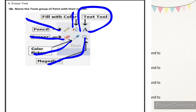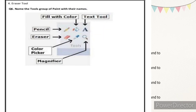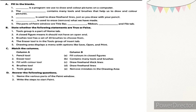What is text tool? Text tool means if you want to write something on top of your drawing, you can use the text tool to add text over your picture.